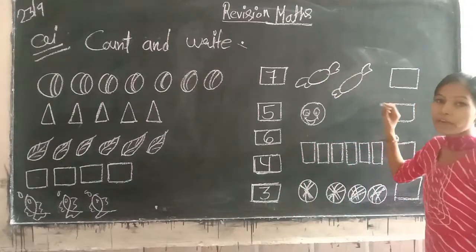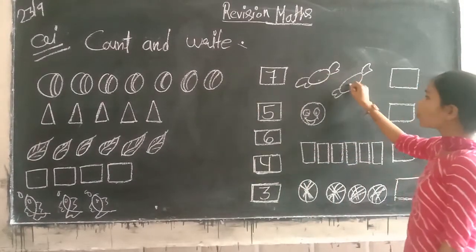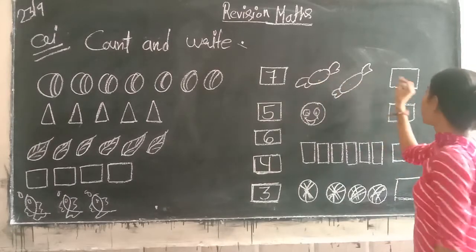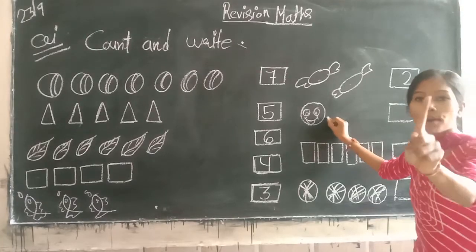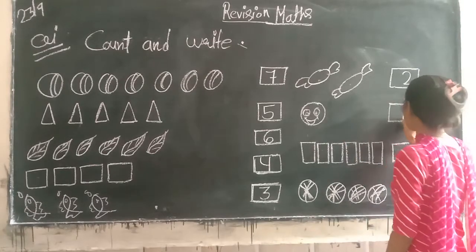Next, toffee, candy. One, two. How many? Two. Then smile face, only one.